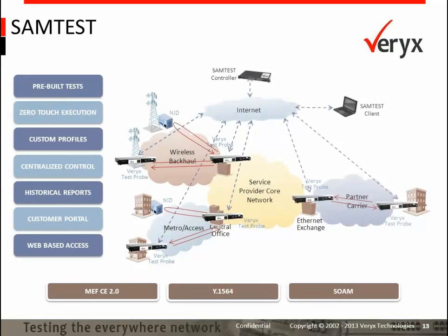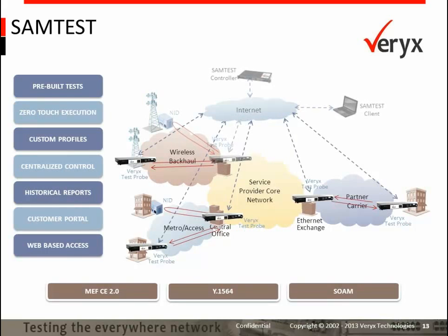This is because in the case of wholesale, you would want to ensure maximum integrity before turn-up. Otherwise, troubleshooting a live circuit involving multiple operators could be significantly time-consuming. Variant 2 can perform testing using test probes at a suitable aggregation point and looping back traffic from third-party Ethernet access devices. Typically, this is used in cases where service providers want to optimize the time taken to ship test probes to the access network.